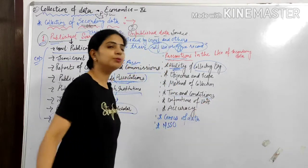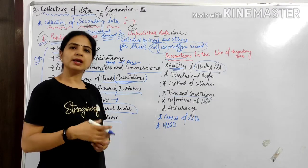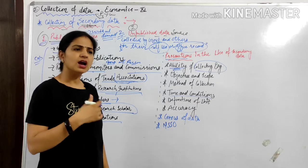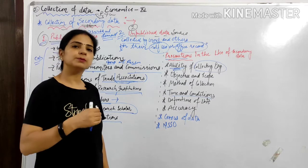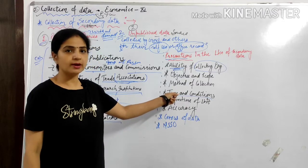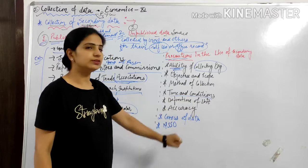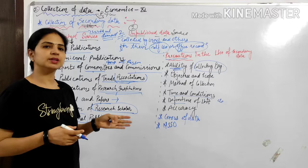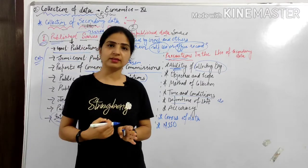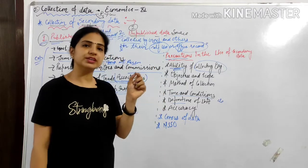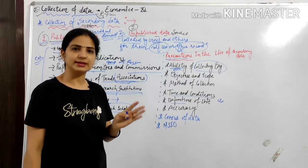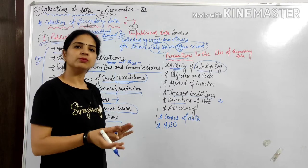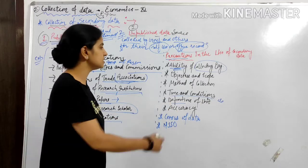Then time and conditions — sometimes the economic conditions are not normal. For example, if I study prices, supply, and demand during Corona time, my report will be wrong because those are not normal conditions. Similarly, data from wartime or natural calamities is not a normal study. So time and conditions of the study is also an important factor. Then definitions of units — the units used like crores, liters, per year, per person, per population must be properly defined. If there is no unit definition, it is useless. Also, accuracy — check whether they gave an approximate report, meaning the values may not be accurate.